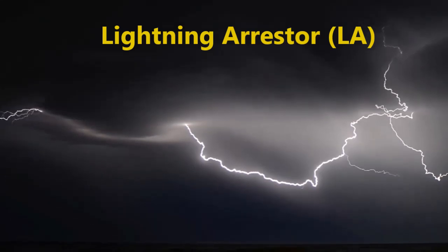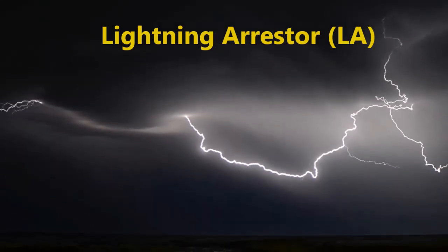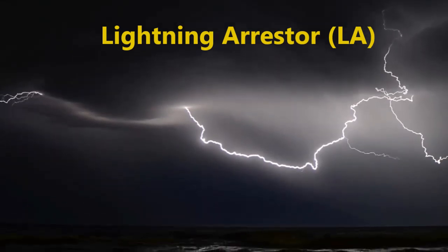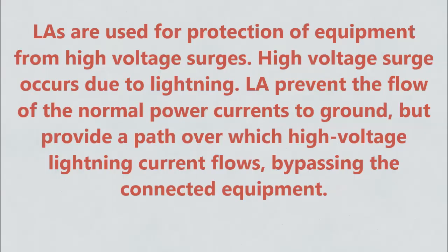Sixth, lightning arrestors, also called LA. Lightning arrestors are used for protection of equipment from high voltage surges. High voltage surges occur due to lightning. Lightning arrestors prevent the flow of normal power currents to ground, but provide a path over which high voltage lightning current flows, bypassing the connected equipment.